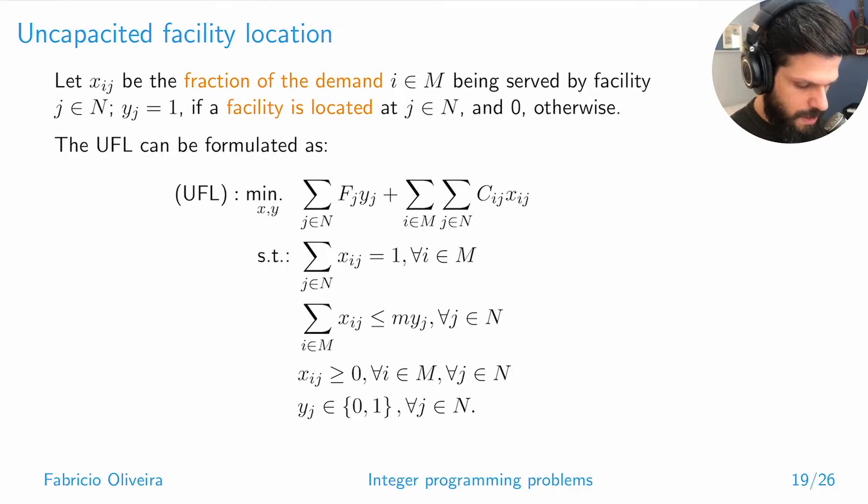With these two variables, my model looks like so. This is the first time we have a mixed integer objective function. We have one parcel that represents fixed cost and another that represents variable cost. The fixed cost is what you pay to have a facility located, and the variable cost is proportional to the demand you satisfy.